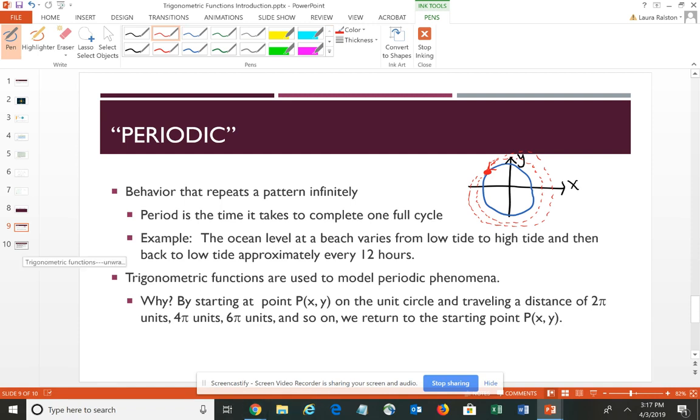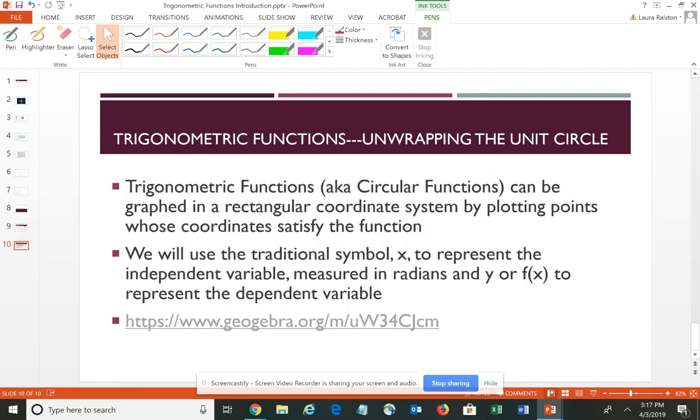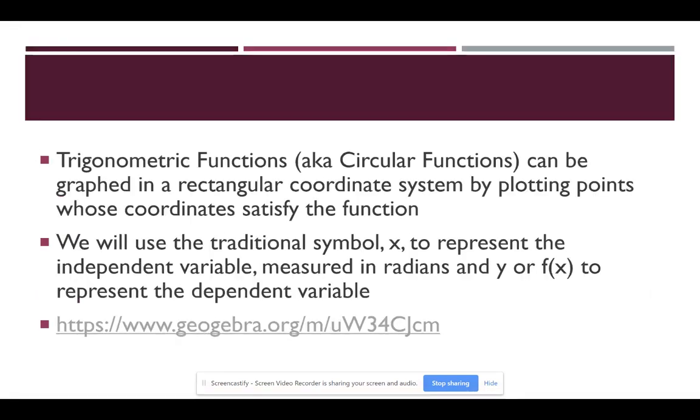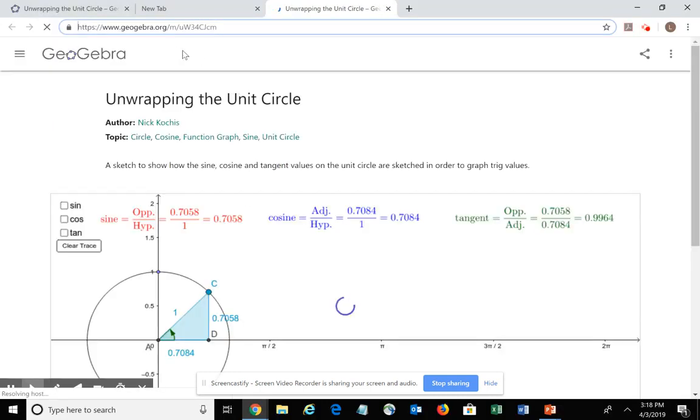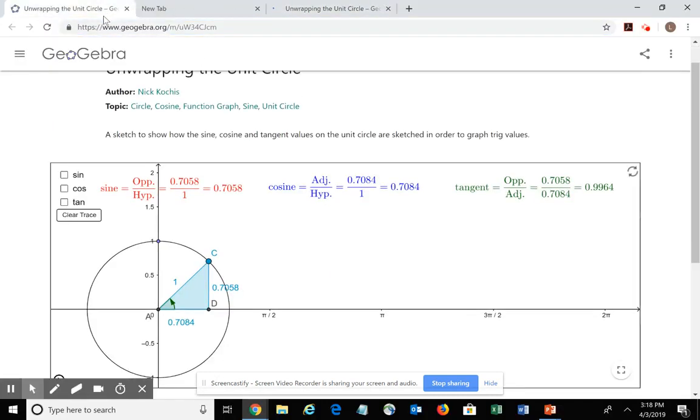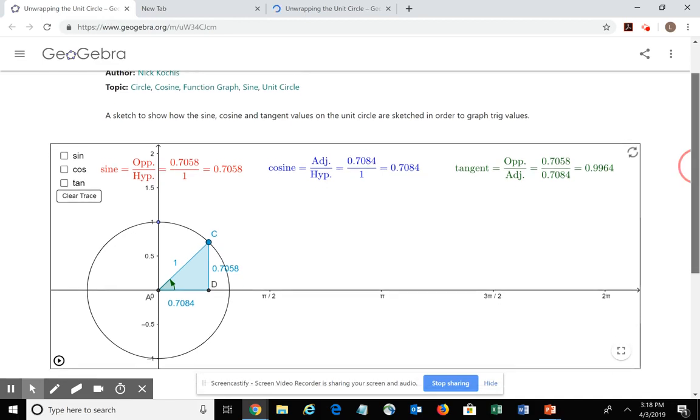When we start thinking about graphs within the two dimensions of the coordinate plane, where we can actually graph trigonometric functions on our coordinate plane in two dimensions, we use the traditional symbol X – actually what we're doing is we're kind of unwrapping that unit circle. So I have a neat little video here that I've inserted the link that will actually show you that, okay. It'll show us that idea of unwrapping the circle.